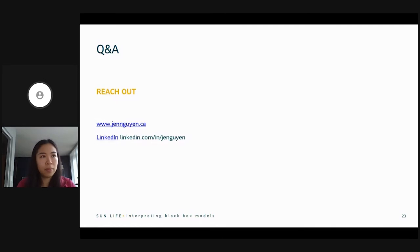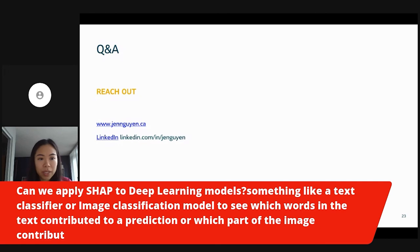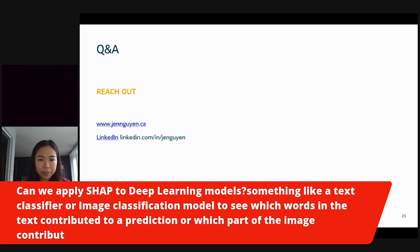Thank you, Jennifer. Yeah, you're perfectly on time as well. And there are a few questions. The first question is, can we apply SHAP to deep learning models? Something like a text classifier or image classification model? Can we ask you to see which words in the text contributed to a prediction or which part of the image contributed to a prediction? Yes, you can. Actually, in the SHAP GitHub repo, Scott Lundberg has provided a few notebooks of how you can do that to a deep learning model. Especially, I think he has an example for text as well. So I would definitely check out the repo. He also showed how he did it for text and for images. So it's a great resource there.